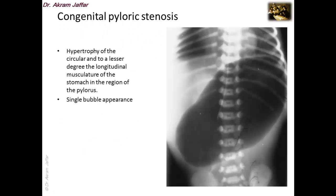This is the X-ray of the patient with hypertrophic pyloric stenosis. There is hypertrophy of the circular and sometimes the longitudinal muscle of the pylorus of the stomach. On X-ray we see the characteristic single bubble appearance — the stomach is distended, shown here with a catheter passed through the esophagus into the stomach with air pushed in. This single bubble appearance, together with the knot on the right costal margin, is characteristic for congenital pyloric stenosis.